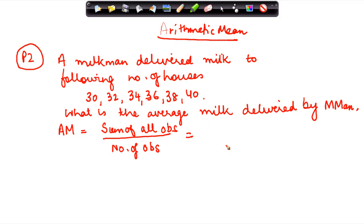What are my observations? My observations are these. So basically what do I do? I write 30 plus 32 plus 34 plus 36 plus 38 plus 40. And how many observations do I have? 1, 2, 3, 4, 5, and 6.